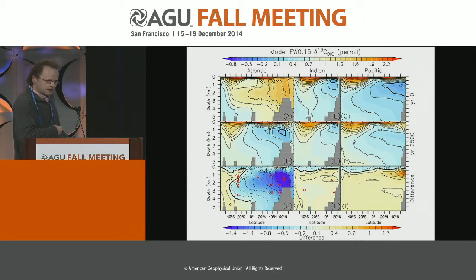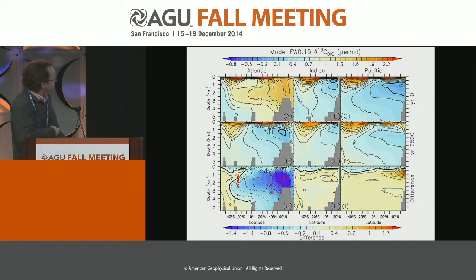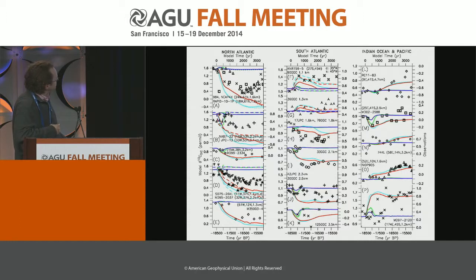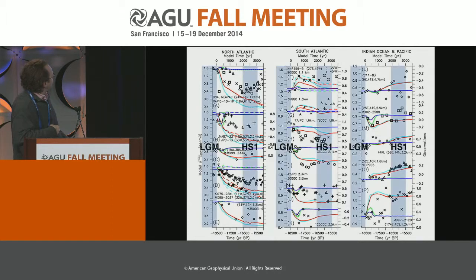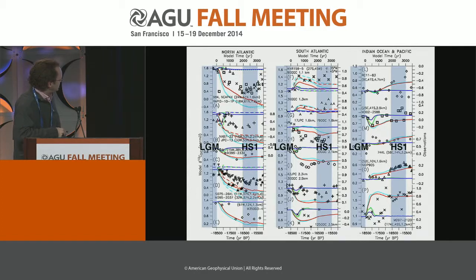We have tried to synthesize observations from existing databases, and those locations are shown here as symbols. There's data from the North Atlantic, South Atlantic, and a few records from the Indian and Pacific Oceans. I'll show you these observations in a couple of minutes.